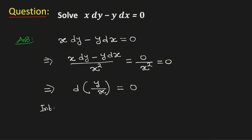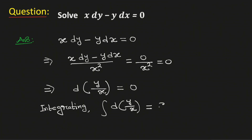Now integrating both sides, we get the integral of d of y by x is equal to the integral of 0, which is 0. So we need to add the integration constant c, which gives us y by x is equal to c. That is, y is equal to cx is the solution of the given differential equation.